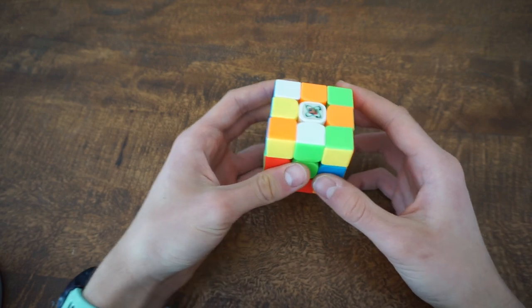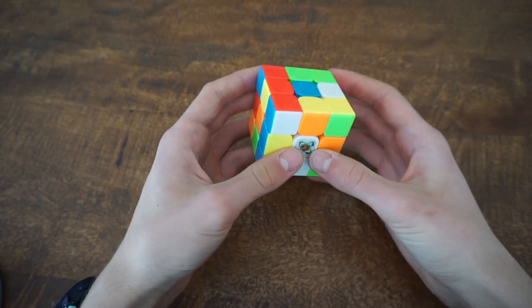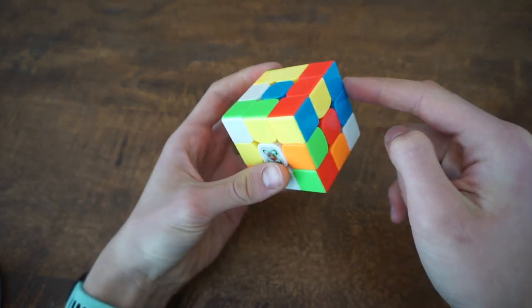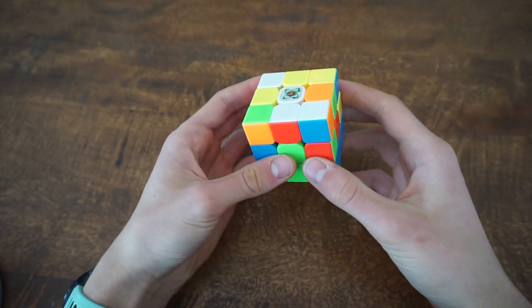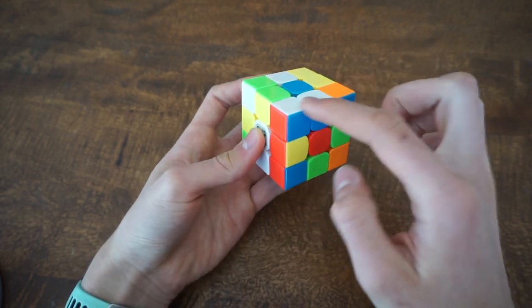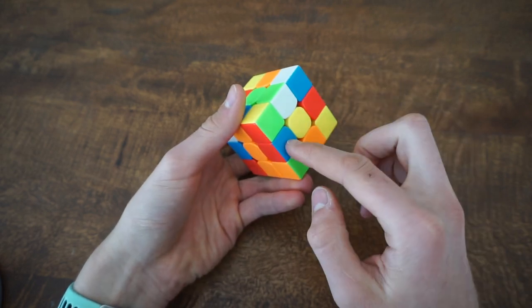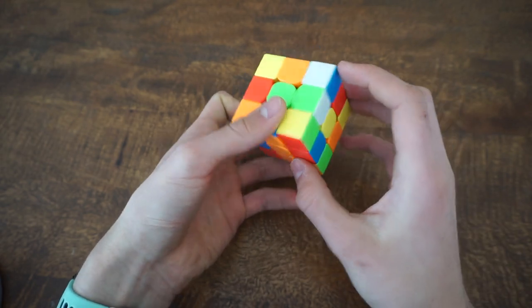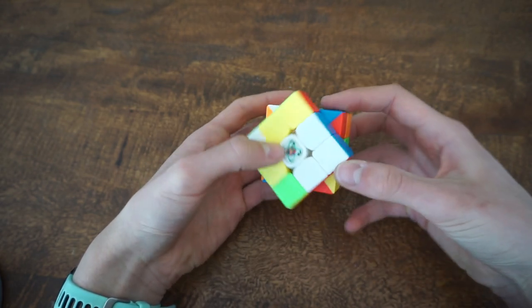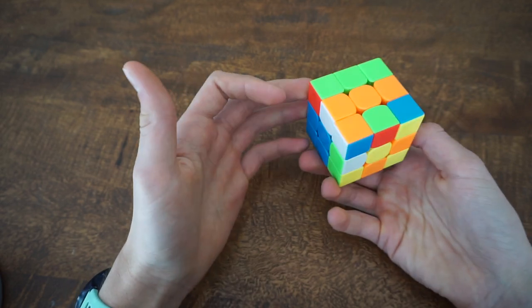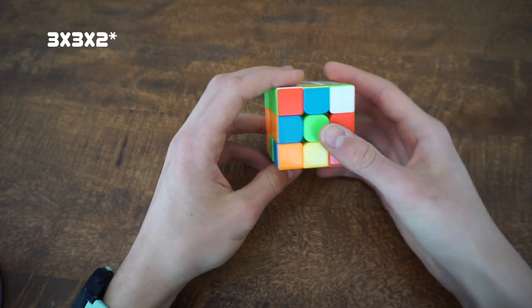Okay so first what I did is I did a B2 that connected this F2L pair then I brought this piece right here and did an R' just to bring this one here. Before doing the R' I connected this red blue piece to here, then I did the R' and then I did the U' to make the 2x2 block.